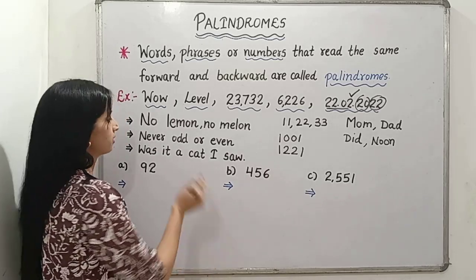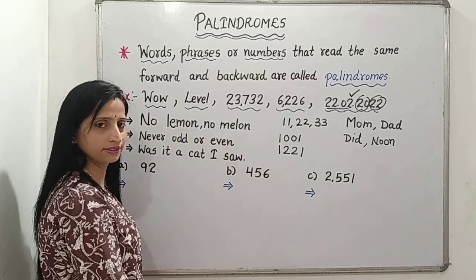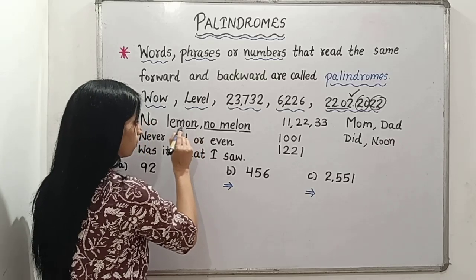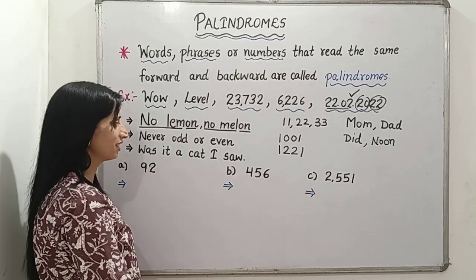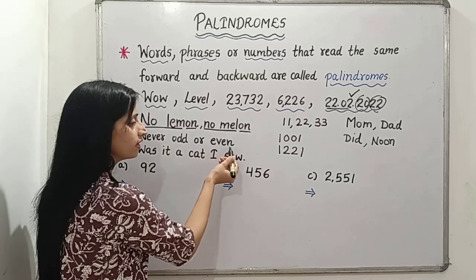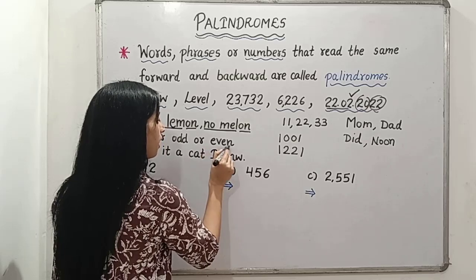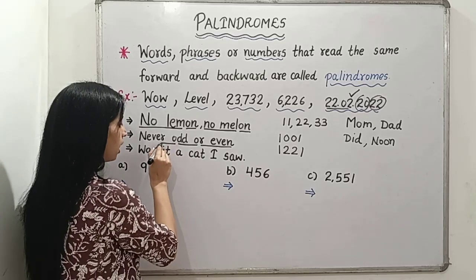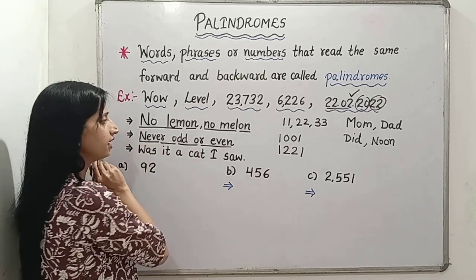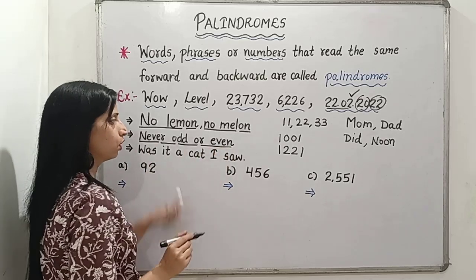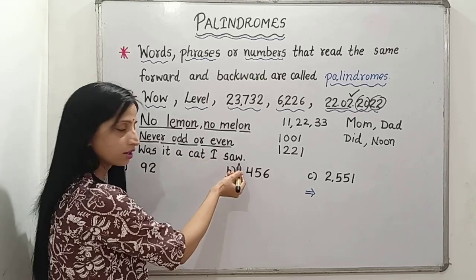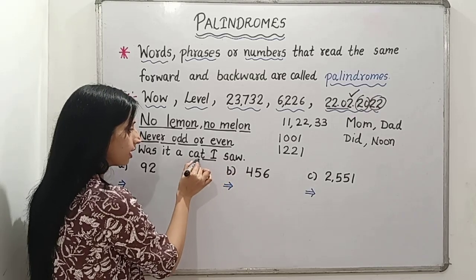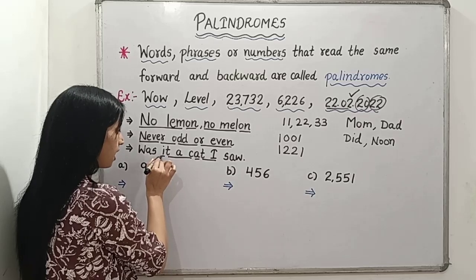Now moving on to a few phrases. 'No lemon, no melon' — let's read it from the back side: 'No lemon, no melon.' Next, 'Never or, or even' — let's read it from the back side: N-E-V-E-R, 'never'; O-R, 'or'; O-R, 'or'; E-V-E-N, 'even' — so 'never or, or even.' Next, 'Was it a cat I saw?' — from the back side: W-A-S 'was,' 'it,' 'a,' 'cat,' 'I,' 'saw.'